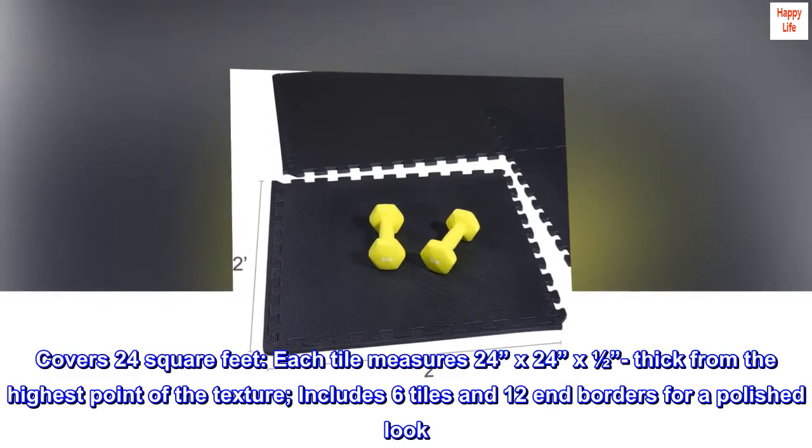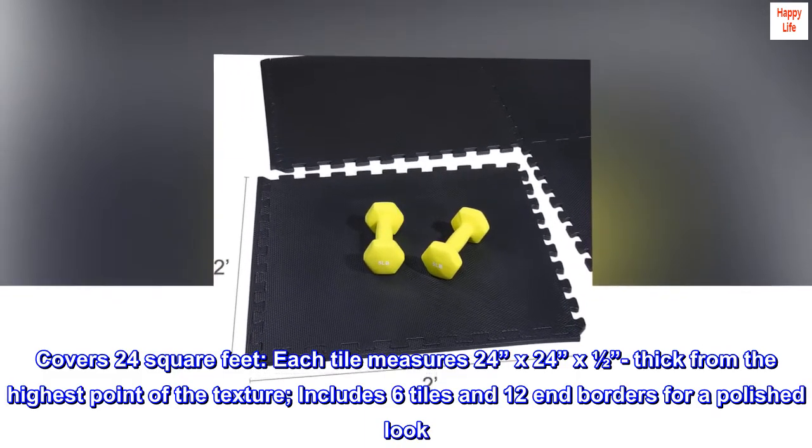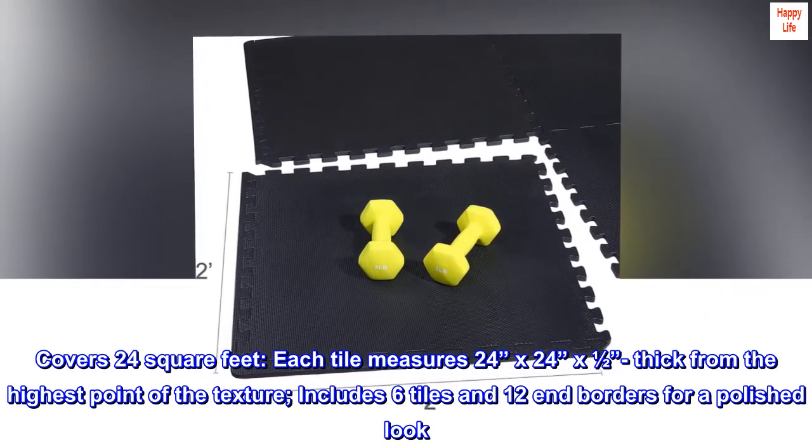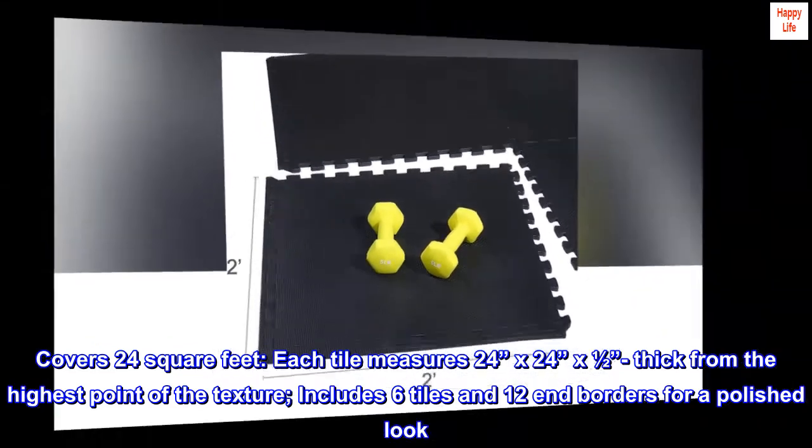Covers 24 square feet. Each tile measures 24 inches by 24 inches by one-half inch thick from the highest point of the texture. Includes six tiles and 12 end borders for a polished look.